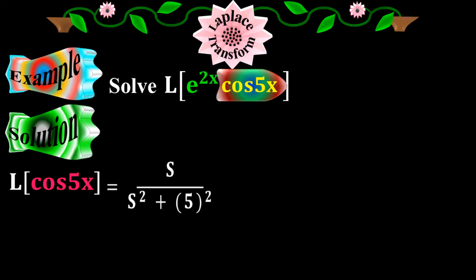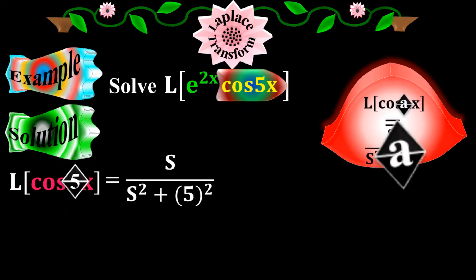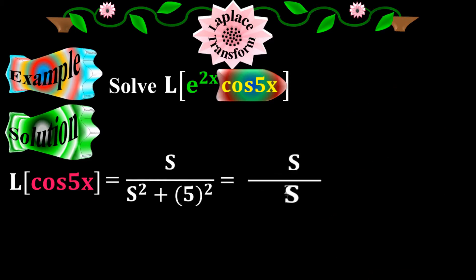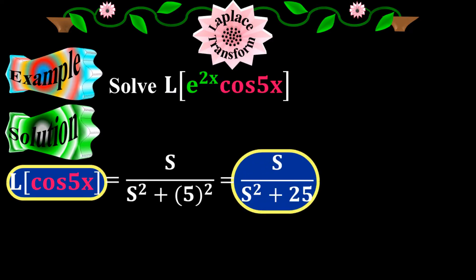Laplace of cos 5x equals to s over s squared plus 5 to the 2. I apply the fourth elementary condition here which is cos ax equals to s over s squared plus a squared, where my constant a is 5 here. It equals to s over s squared plus 25. So Laplace of cos 5x equals to s over s squared plus 25.